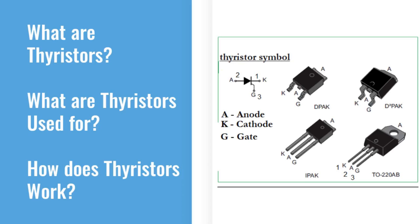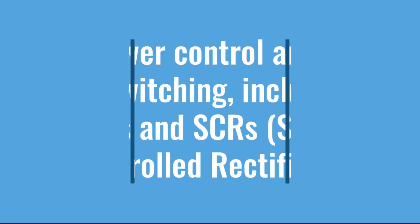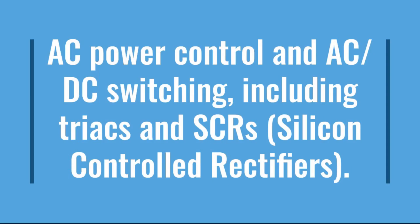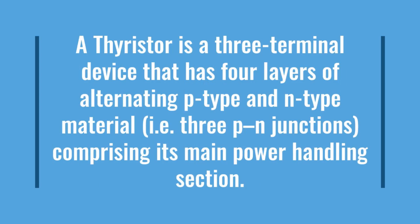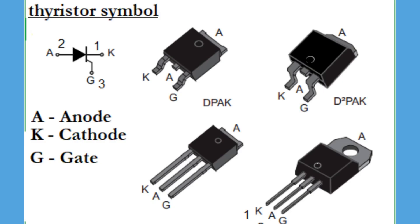What are thyristors, what are they used for, and how do they work? A thyristor is a general name for a number of high-speed switching devices frequently used in AC power control and AC-DC switching, including TRIACs and SCRs — silicon controlled rectifiers. A thyristor is a three-terminal device that has four layers of alternating P-type and N-type material, comprising three PN junctions in its main power handling section. The control terminal is called the gate electrode, abbreviated G.